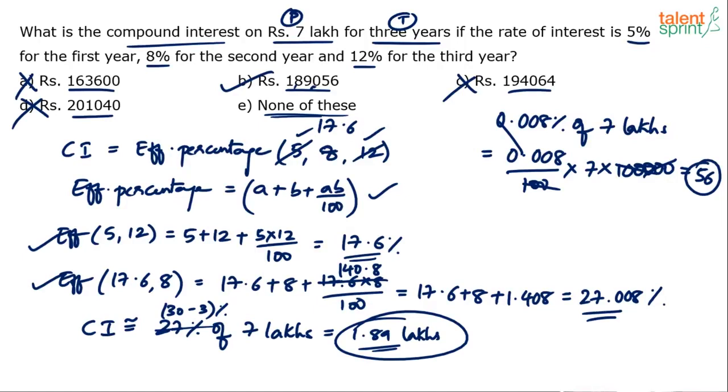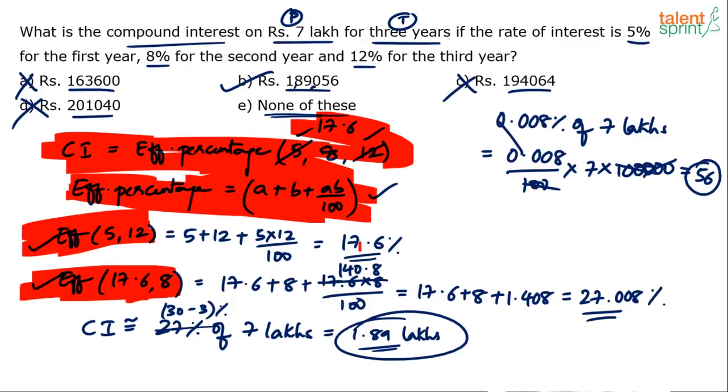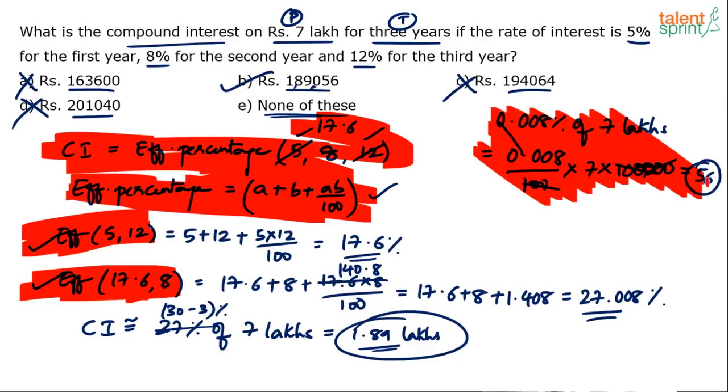Please do not go by the length of the explanation or the number of steps that I've put on paper. If you observe, many of these steps can be avoided. I mean, these are redundant steps. Some of these are only for the sake of explanation. Like, whatever I've written here, CI equals to this part or effective percentage formula, not required. Or effective of 5 and 12, not required. Effective of 17.6 and 8, not required. Just play with the numbers. This calculation and then this calculation and then this calculation. I think these are the only three steps. You don't have to write on paper. I mean, you know that 0.008 percentage of 7 lakhs is going to be 56. So don't waste your time putting steps on paper. The more you write on paper, the more time it takes. So I think it's a 45-second problem. It wouldn't take more than 45 seconds. Option B, 1,89,056 is the final answer.